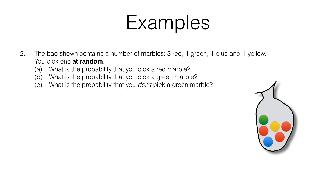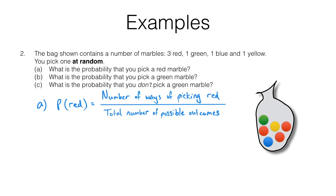Events are not the same as outcomes. An event is a set of outcomes. Part A asks for the probability that you pick a red marble. Using our formula, the probability of picking a red is the number of ways of picking red over the total number of possible outcomes.